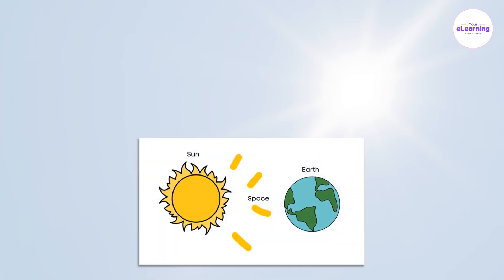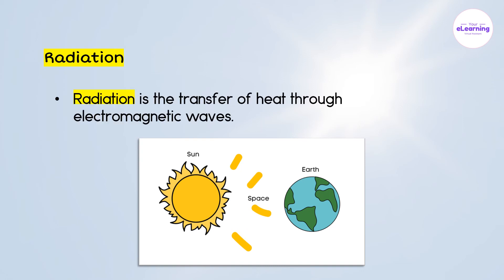The heat from the sun moves through space to the earth. This method of heat transfer is called radiation. Radiation is the transfer of heat through electromagnetic waves.